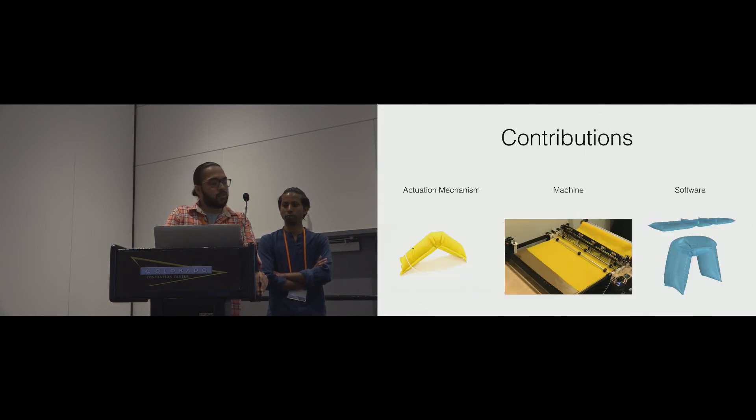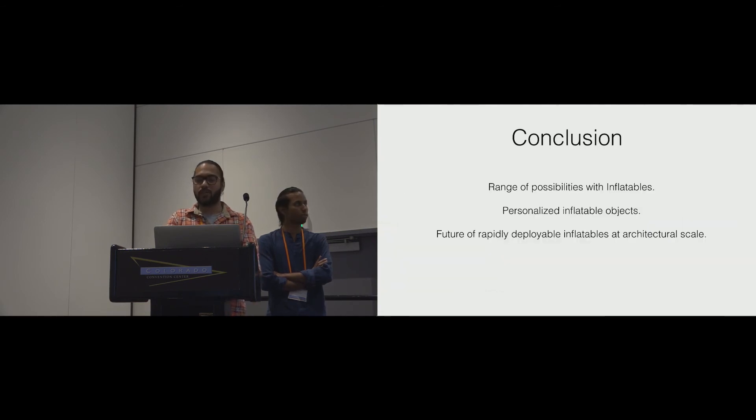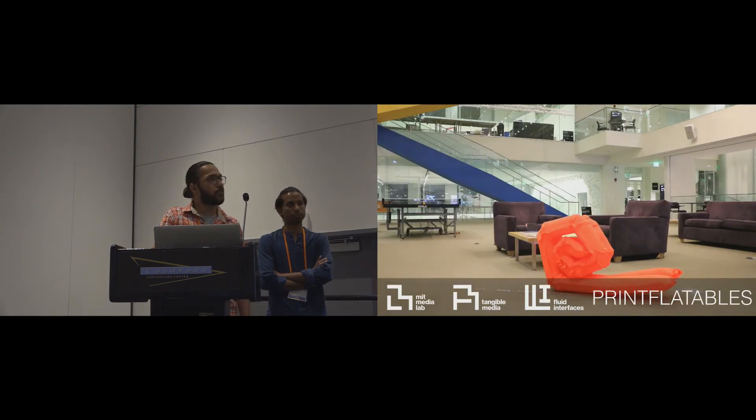So far through our examples, our summary and primary contributions are an actuation mechanism that can be embedded in an inflatable object, a machine that helps fabricate these objects easily, and a software that helps you design and visualize these objects before you actually go and print them. With our automated hardware and software, we explored a wide variety of inflatable objects. We foresee designers taking a lead in this, and taking advantage of our system to make personalized inflatable objects, and our work also points to a future of rapidly deployable inflatable structures at architectural scale. With this, we would like to open up to questions as well. Thank you.